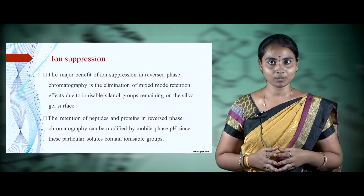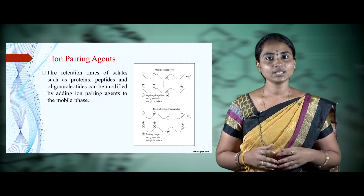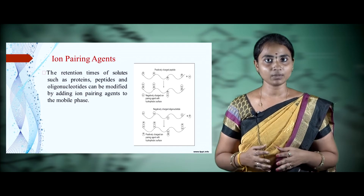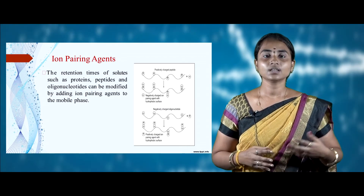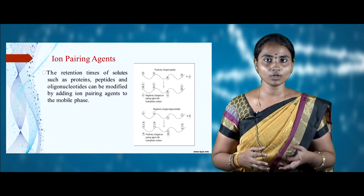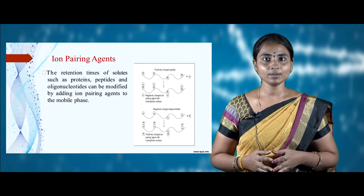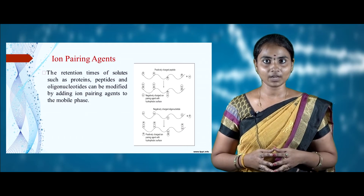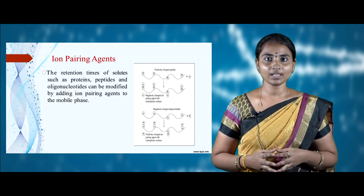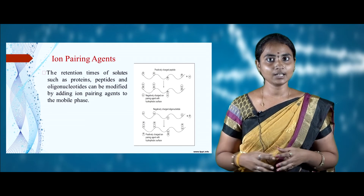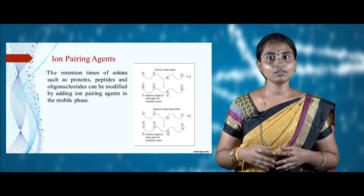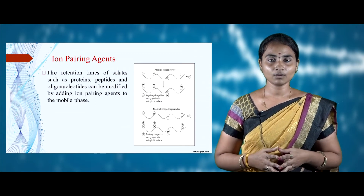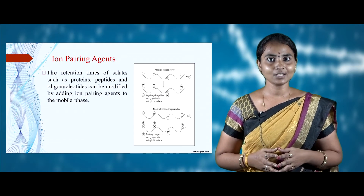Retention of peptides and proteins in reverse phase chromatography can be modified by using different pH of mobile phases, allowing different concentration gradient elutions. To elute different components like proteins, peptides, and oligonucleotides, different elution buffers are used; if insufficient, ion pairing agents can be added to the mobile phase. For example, to isolate a positively charged peptide, a negatively charged ion pairing agent is used; for a negatively charged oligonucleotide, a positively charged ion pairing agent is added.